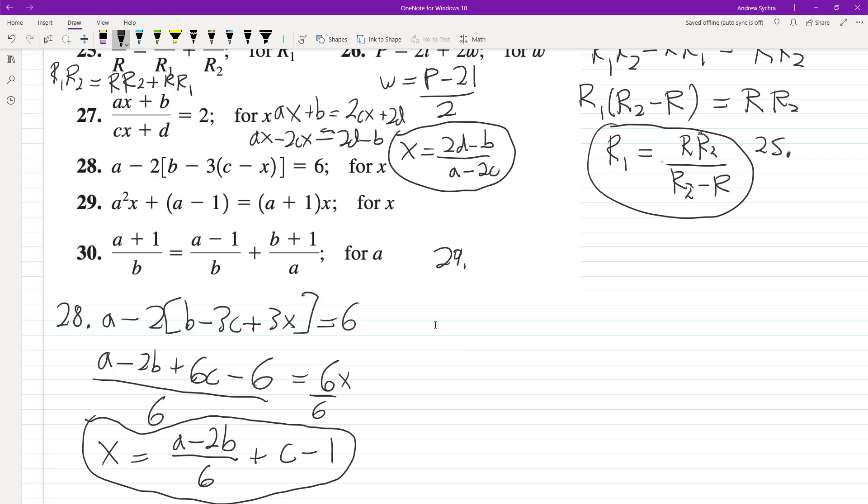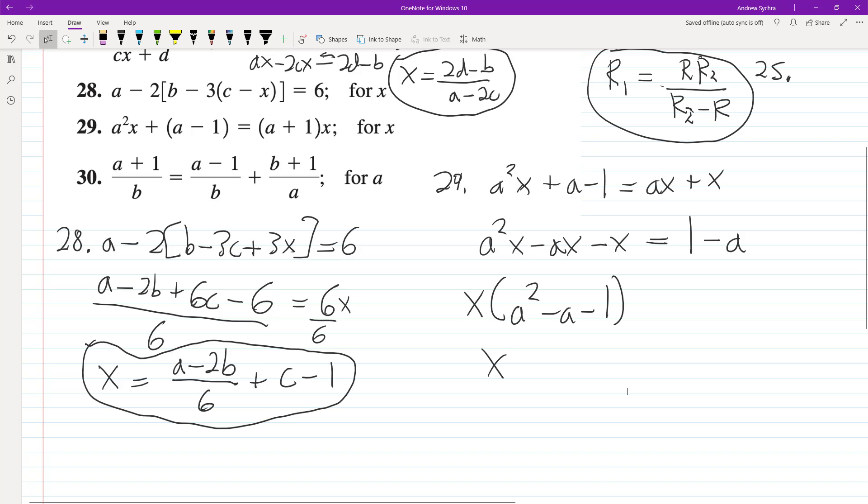So 29, solve for X. All these terms have an X in them. So we have A squared minus A minus 1. And we end up with X is equal to 1 minus A over A squared minus A minus 1.